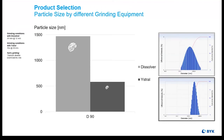Most individuals feel that particle size distribution is only determined by the equipment used, and that's not 100% true. It's also determined by the media used — the amount, the actual type and volume, the compatibility in the system — as well as the additives selected. Choice of those additives is going to be critical in determining how well a pigment is dispersed.